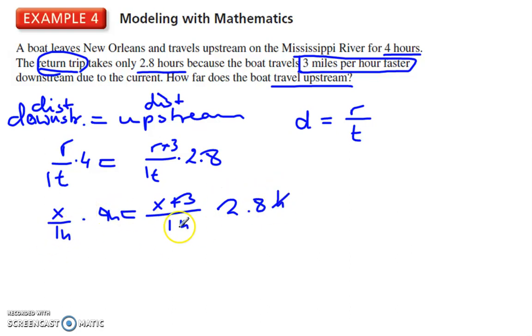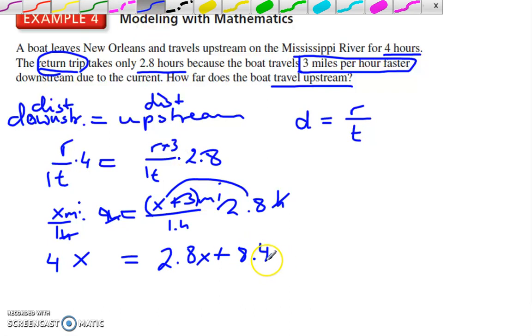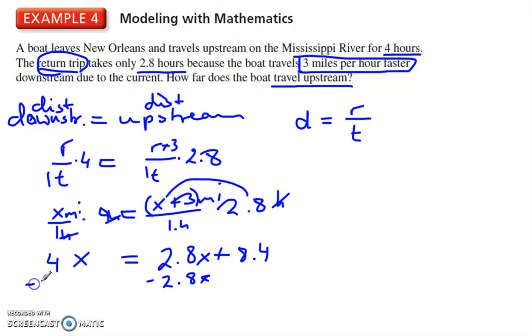We can cancel out the hour because this is hours here, and then we can find the distance. This is miles here, and miles. So, x times 4, or 4x miles is equal to 2.8x plus 8.4. Subtract 2.8x from each side, and we get 1.2x is equal to 8.4. Divide by 1.2, and x is equal to 7.